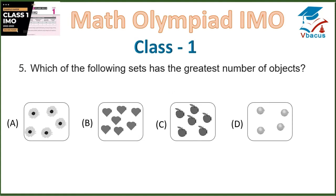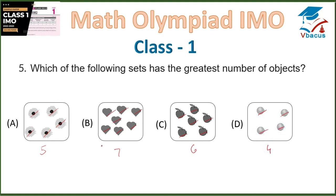Question 5: Which of the following sets has the greatest number of objects? We have to count the objects in every set. First set: 1, 2, 3, 4, 5, 6, 7. Second set: 1, 2, 3, 4, 5, 6. Third set: 1, 2, 3, 4. Option B is the greatest.